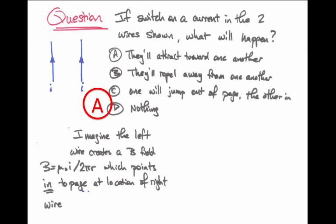Imagine that the left-hand wire creates a magnetic field. This magnetic field will be given by mu-naught times I over 2 pi r. At the location of the right-hand wire, this magnetic field points into the page where the right-hand wire is located.